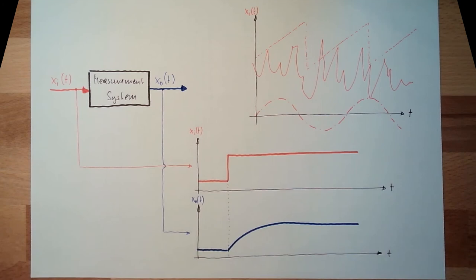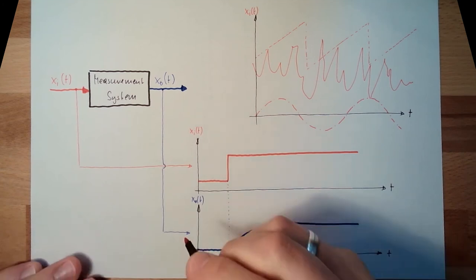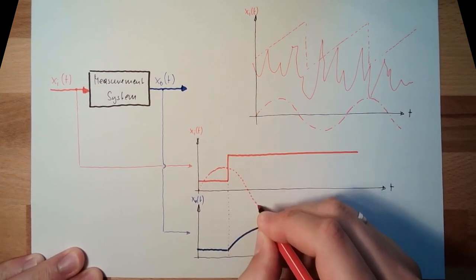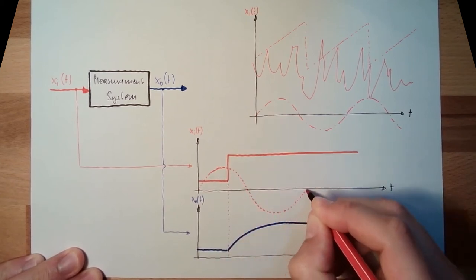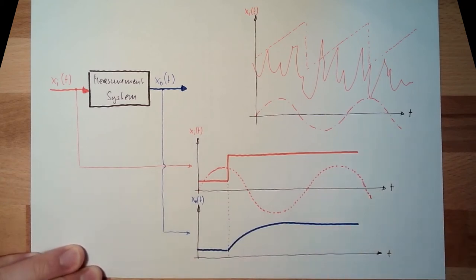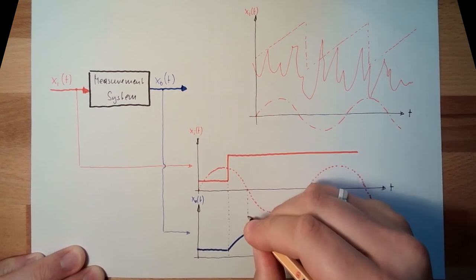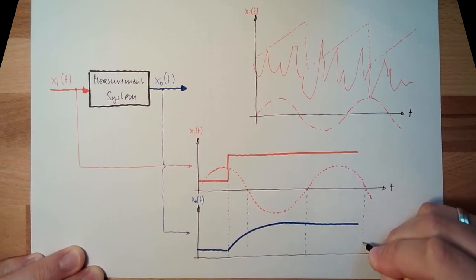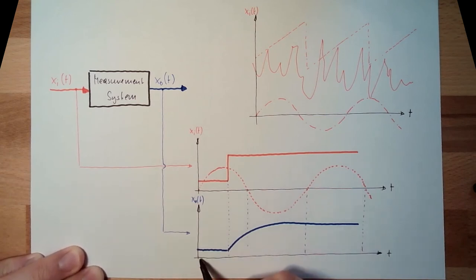Another possible test function is sinus. So if I simply add here a sinus with different strength, this is also another possible test function. I will now draw a sinus response. That would be the step response. The sinus response is probably looking like this, it's a little bit later.